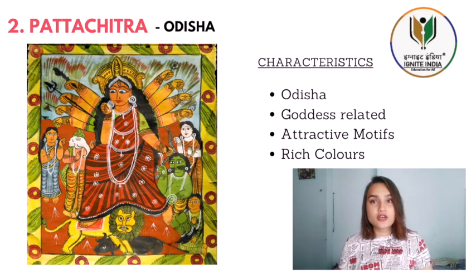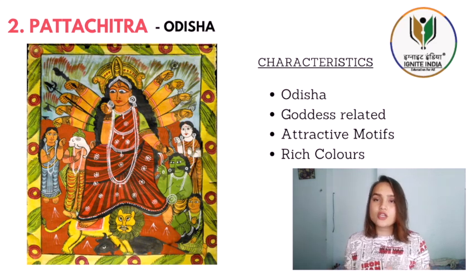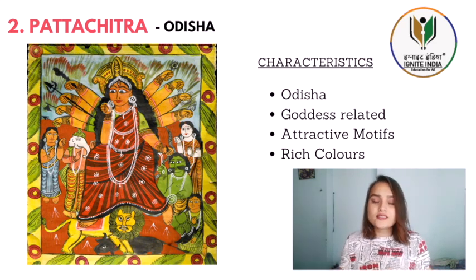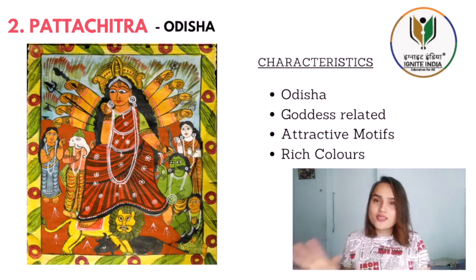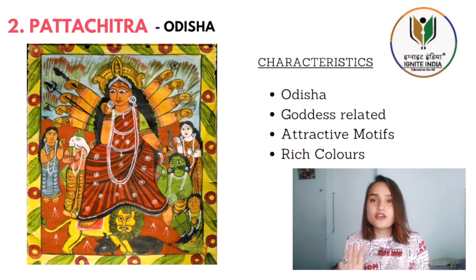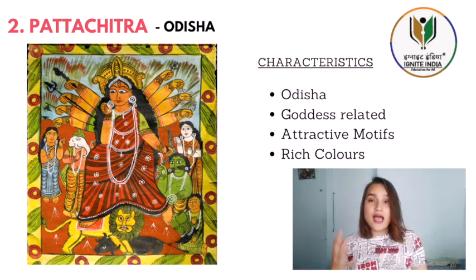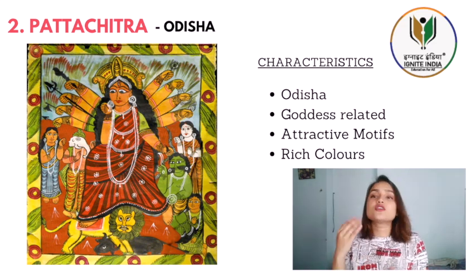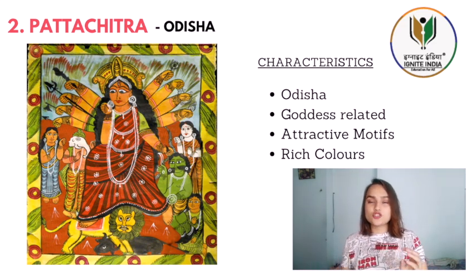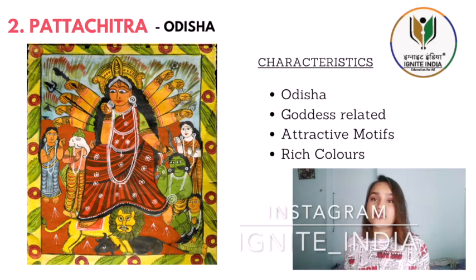Our next art form is Patta Chitra, which is from Odisha and West Bengal — that area. The characteristics are that it is goddess-related; every picture has some features taken from goddesses. It has attractive motifs and rich colors. In earlier times, they used to make vegetable colors, and these are all bright.